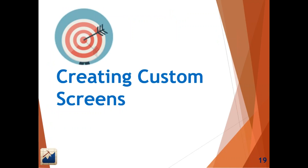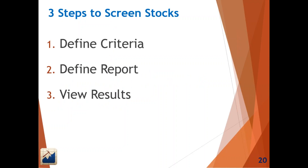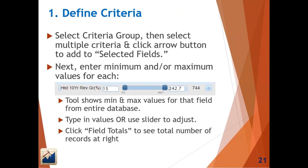Now that you know how to use predefined screens, let's talk about creating custom screens from scratch. The predefined screens are a great jumping-off point to modify into your own saved screens. But at some point you'll start at step one and define criteria from scratch. We'll build a sample screen for midsize growth stocks, starting with defining the criteria using the tool that lets you set minimum and maximum values for each field.